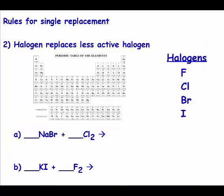The second rule is halogens replace less active halogens. Our halogens are on the periodic table and they're in order of their reactivity, so these will not be given to you in a separate chart because they're already on the periodic table. Notice that fluorine is the most reactive and iodine is the least reactive.